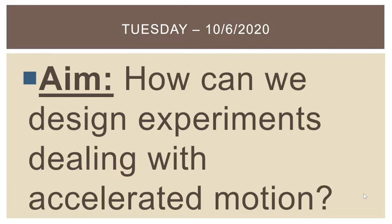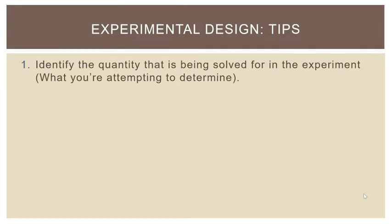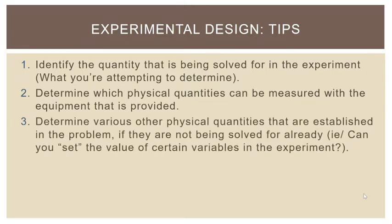As far as experimental design tips are concerned, you're basically going to approach all of these problems the same way. You're going to identify what they're asking you to solve for — you're going to look at the problem and say, they're asking me to design an experiment to determine what. Then you're going to figure out what you can measure with the equipment that is provided. Then you're going to look at other physical quantities that are established in the problem, or see what assumptions you can make.